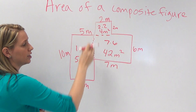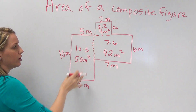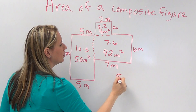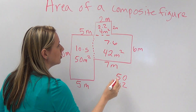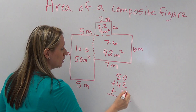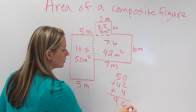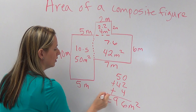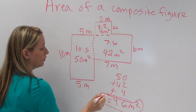Now we've got each of our little sections. To find the area of the whole thing, you just add them all together. So 50 plus 42 plus 4 is going to give you 96 meters squared, and that would be the area of the whole figure.